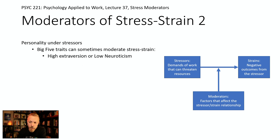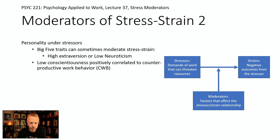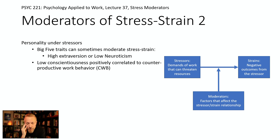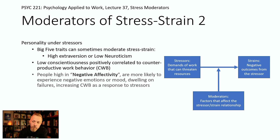High neuroticism can act as a gain, making strains worse. Similarly, low conscientiousness can be positively correlated with stress outcomes — people who don't like to work hard and are then placed under heavy work stressors can show increased likelihood of counterproductive work behavior.